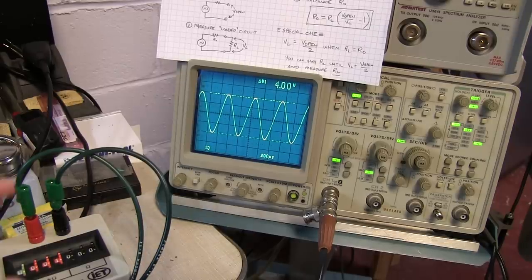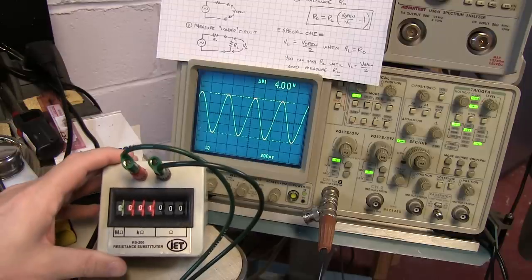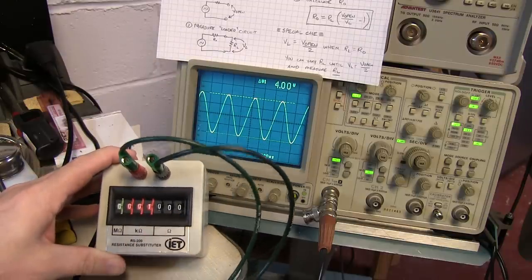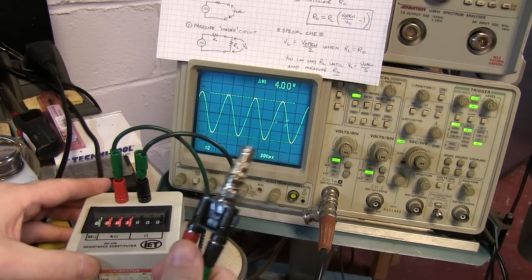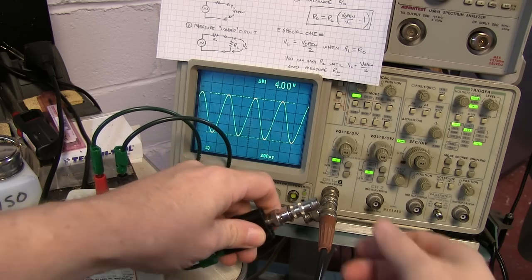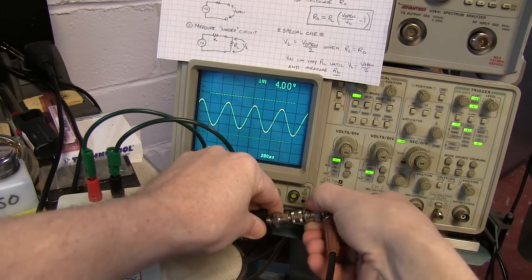Okay to measure the loaded voltage I'm just going to use a resistor substitution box here. I've got this one dialed into one kiloohm or one thousand ohms and I just have it connected up through a couple of banana leads into this adapter which is going to allow me to plug it right in and load my signal generator with that.